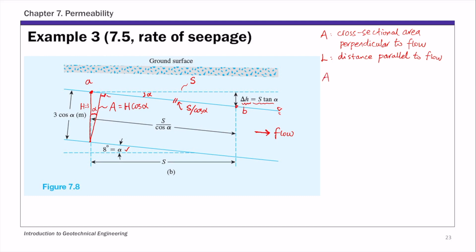So we have A of H times cosine alpha, and that L, that corresponding distance is s over cosine alpha, and that delta H, that head loss is s times tangent alpha. So now we have all these geometries, then we can calculate the hydraulic gradient, small i, which is delta H over L. And if you substitute L and delta H, s cancels out, you're left with just sine alpha.